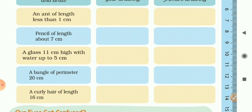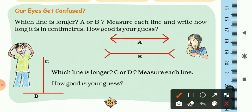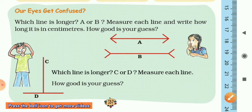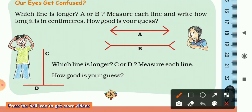Now let's see how our eyes get confused. Which line is longer — A or B? Here we have line A and line B. Measure each line and write how long it is in centimeters. In first view, it is very tough to say which is longer. Generally B is looking longer than A, but that's not true.